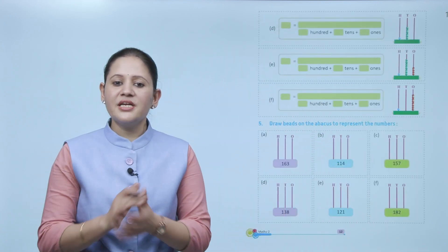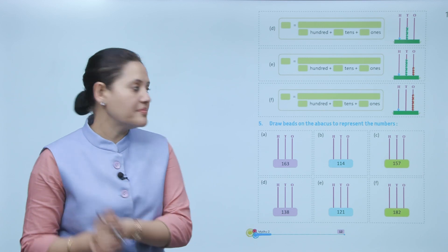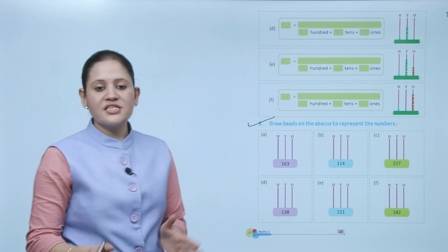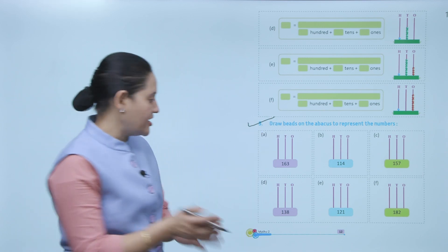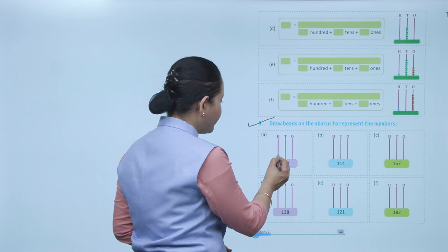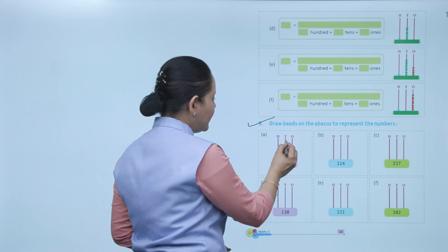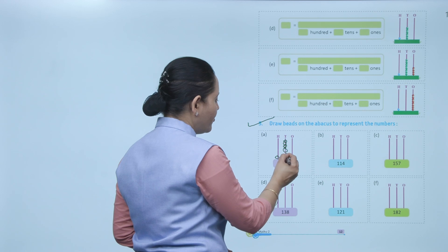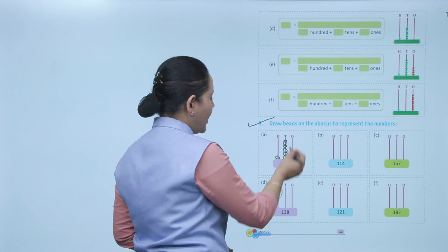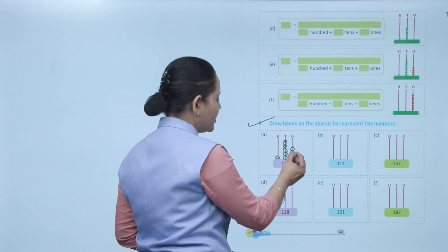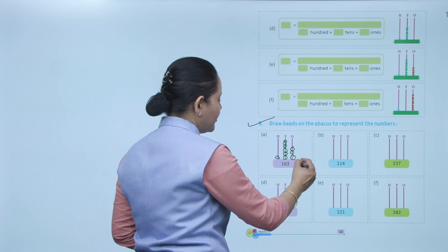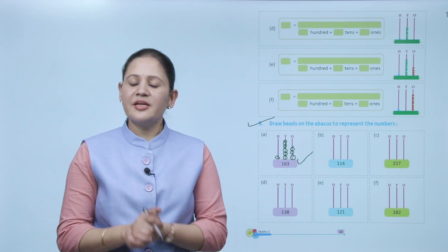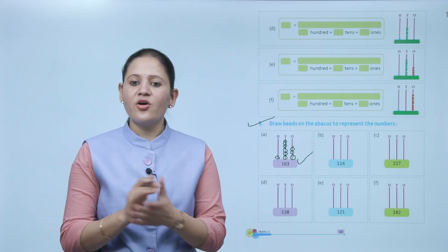Next is: draw beads on the abacus to represent the number. Our number is 163. At the hundreds place: one bead. At tens: six beads — one, two, three, four, five, six. At ones: three beads — one, two, three. This represents the number 163. Like this, we will represent numbers on the abacus.